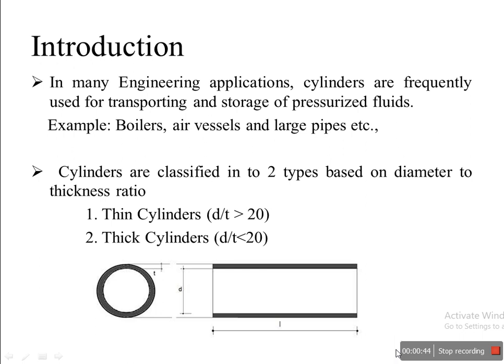These cylinders are classified into two types depending on the diameter-to-thickness ratio. If the diameter-to-thickness ratio is greater than 20, those cylinders are classified as thin cylinders. If the diameter-to-thickness ratio is less than 20, they are classified as thick cylinders.